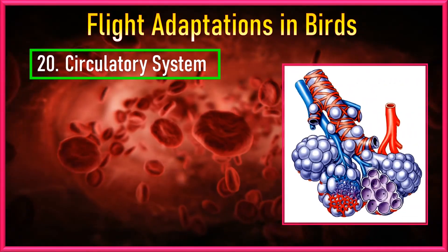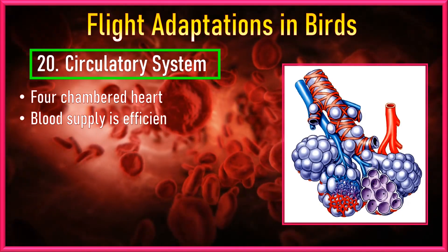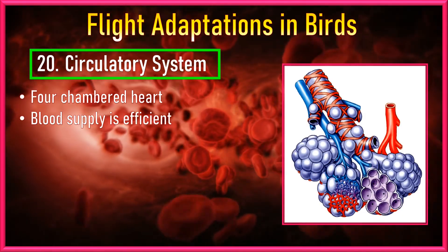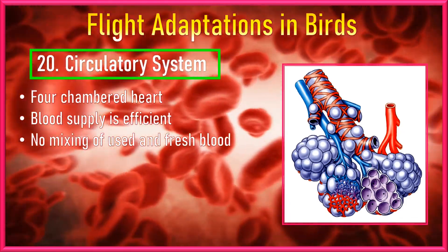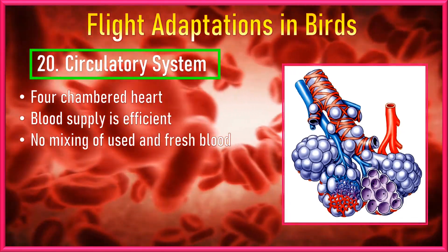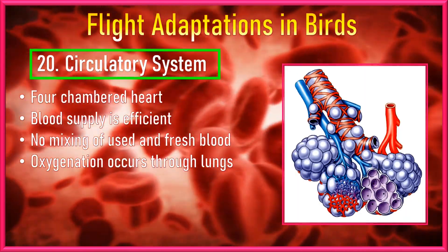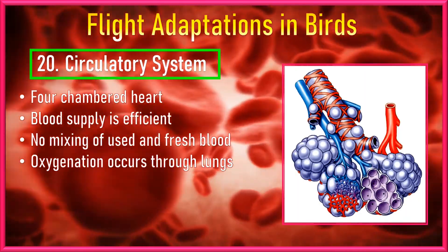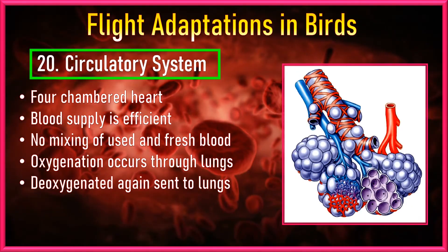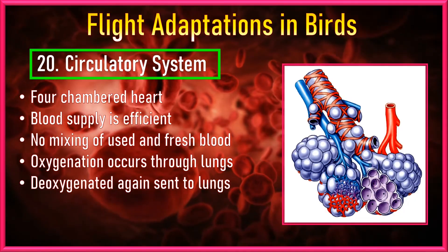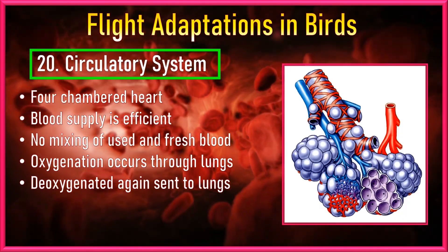Number 20: Circulatory System. Birds, just like us, have a heart with four chambers. This helps their blood move around really well, and their fresh and used blood never mix. This means the blood goes through two circuits in their body — one takes the blood to the lungs to get oxygen, and the other takes it to the rest of the body to deliver oxygen to the cells. These are the top 20 flight adaptations of birds.